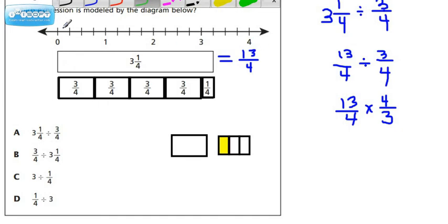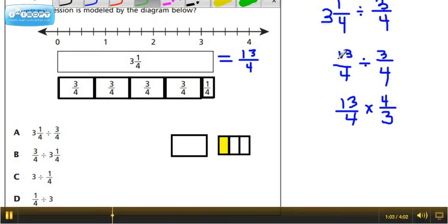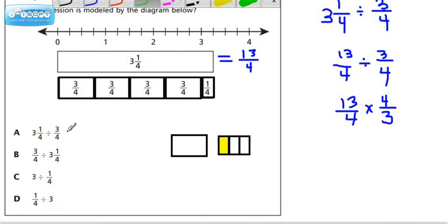If we count how many fourths, see how that's 1, 2, 3, 4, 5, 6, 7, 8, 9, 10, 11, 12, 13 fourths. So if we were going to rename this as an improper fraction, we would rename it as 13 fourths.